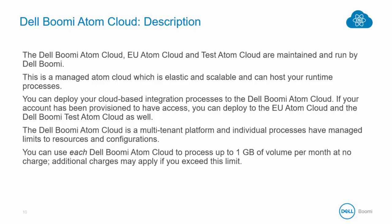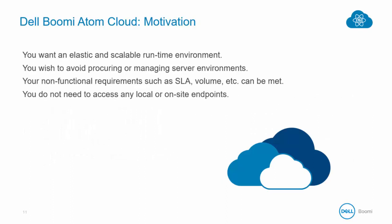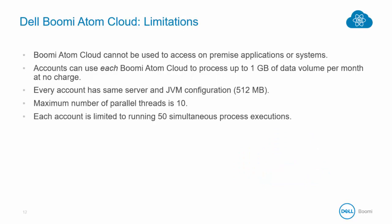You can use each Dell Boomi Atom Cloud to process up to one gigabyte of volume per month at no charge. Additional charges may apply if you exceed that limit. One of the primary reasons people select the Atom Cloud is to reduce the IT infrastructure and footprint associated with the maintenance of a server environment — in terms of hardware, software, and people. With the cloud, you get an elastic, scalable runtime environment, so you don't have to set up and maintain servers, allowing the company to focus resources on core business strengths.